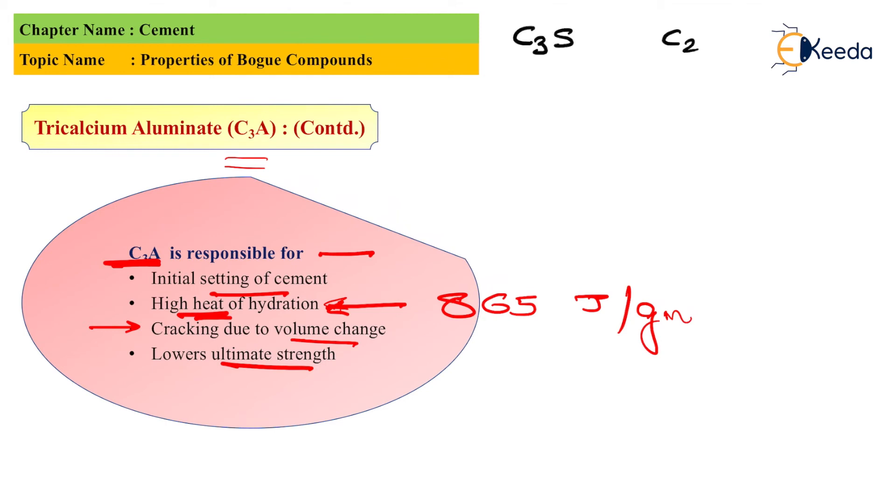As we have already studied, C3S and C2S, the heat of hydration of C2S is 260 joules per gram, whereas of C3S is 500 joules per gram, and of C3A is 865 joules per gram. That's highest of all, and this is least of all.